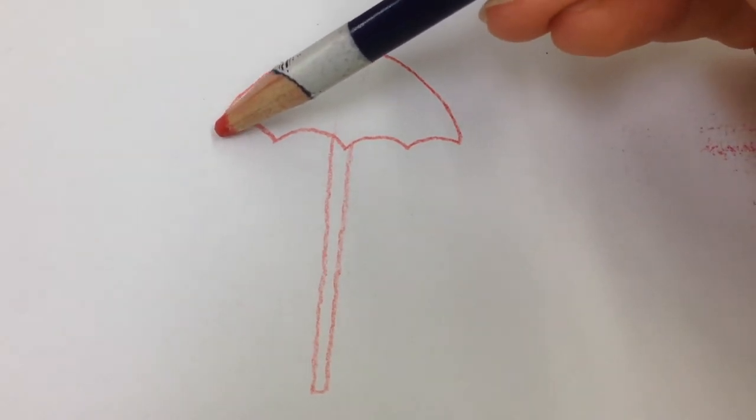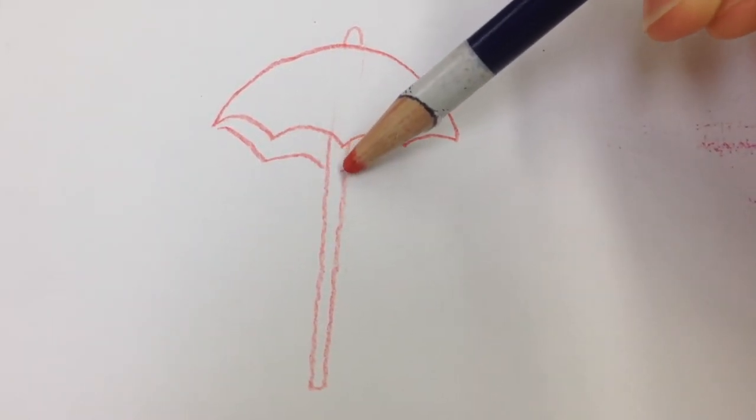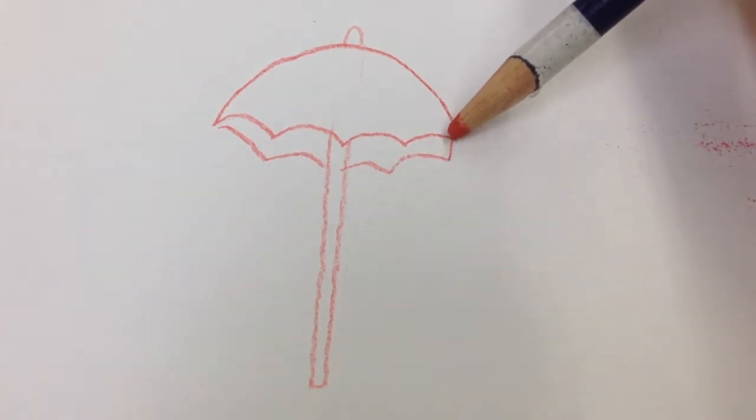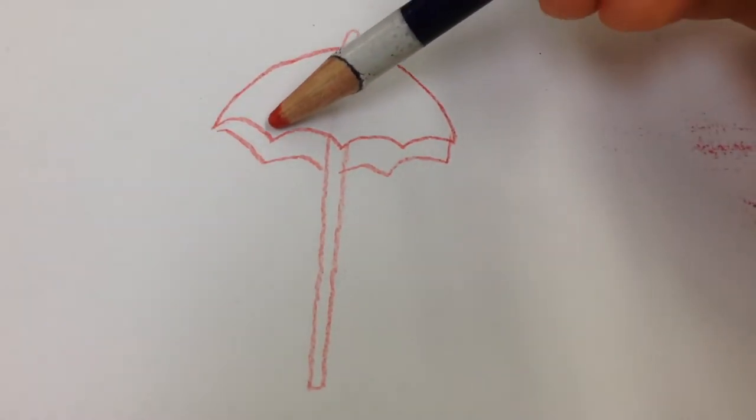Then we'll add more arches in the back to give our umbrella some depth, then we'll add some curved lines.